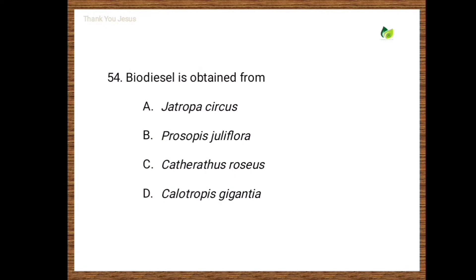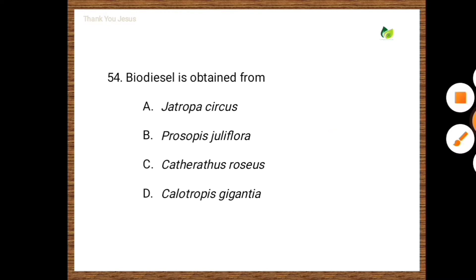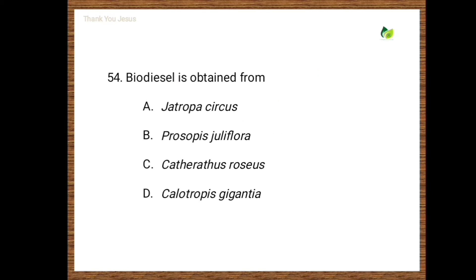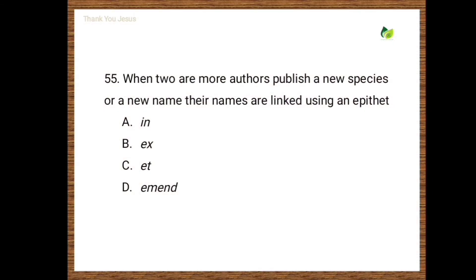Next question: Biodiesel is obtained from — options are Jatropha curcas, Prosopis juliflora, Catharanthus roseus, Calotropis gigantea. The correct option is the first one, that is Jatropha curcas.